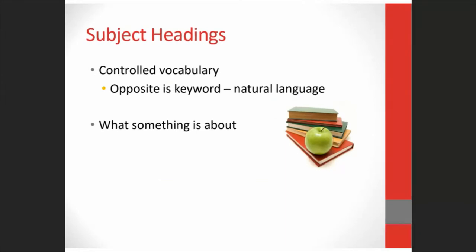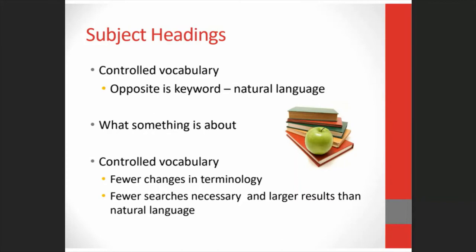Subject headings are another example of authority control. They are a controlled vocabulary of terms used to describe people, places, things, and concepts. The opposite of a controlled vocabulary is keyword or natural language. Subject headings are terms that have been authorized by an organization such as the Library of Congress and tell us what something is about. Slang comes and goes, but authorized subject headings are usually constant unless there is serious justification for a change. Records for authorized subject headings also bring together synonyms for a word — if there were no subject headings, you would need to think of all the possible terms that could be used for a topic and search on them all.